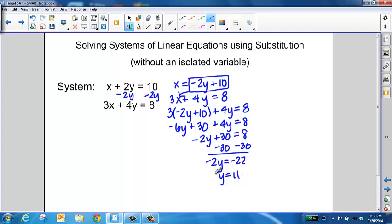But now, just like in the other example, since we are solving a system, you need to figure out what both the x value and y value would be of that point of intersection. Now that we have the y value, we're going to substitute that back into the equation that has the isolated variable.